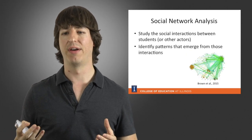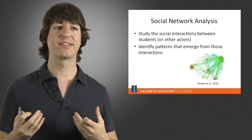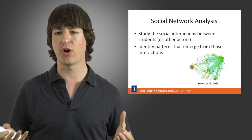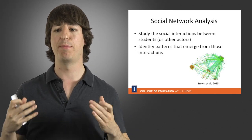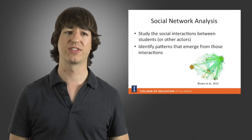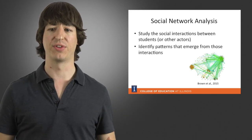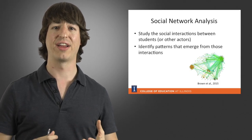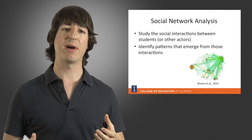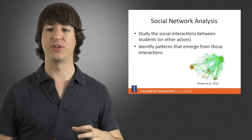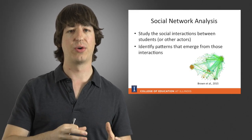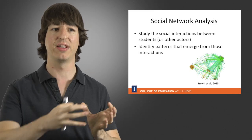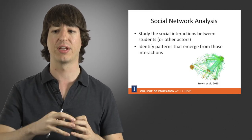A second type of structure discovery method is social network analysis, which is the study of social interactions between students or other actors. We want to identify patterns that emerge from those interactions. For example, using data from online course discussion forums, we might look at whether any communities of students form and then examine the learning outcomes of members of each community — for instance, do students who succeed tend to group together, or do they also interact with students who tend not to succeed?